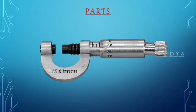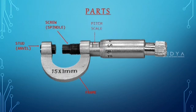The main parts of the screw gauge are: frame, stud or anvil, screw or spindle, pitch scale, circular scale or head scale, thimble, and ratchet.